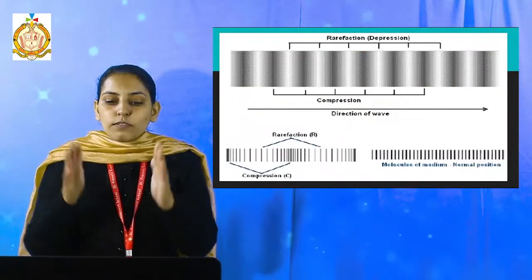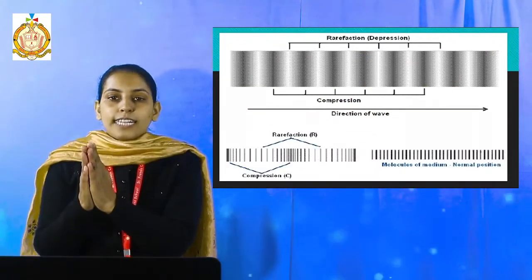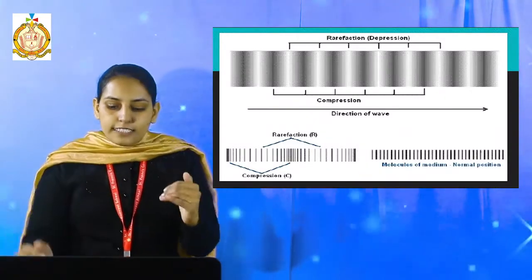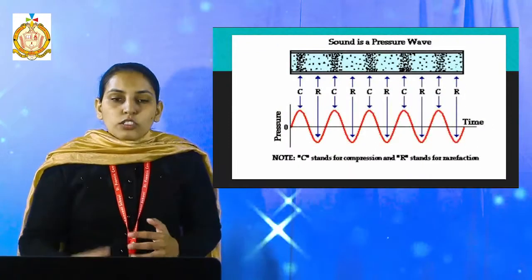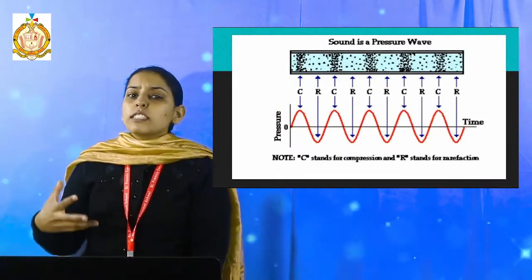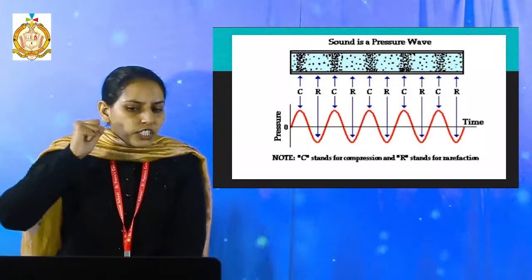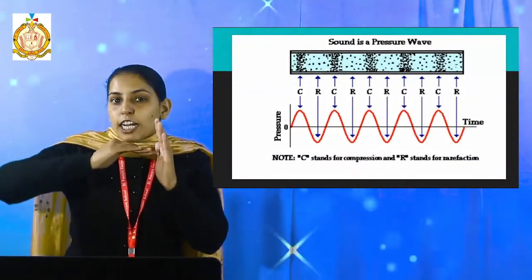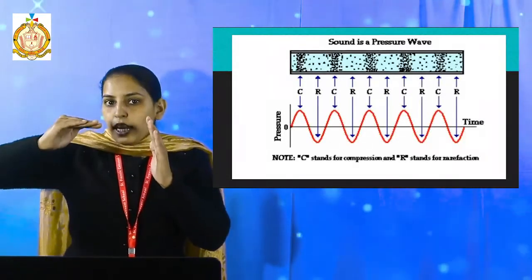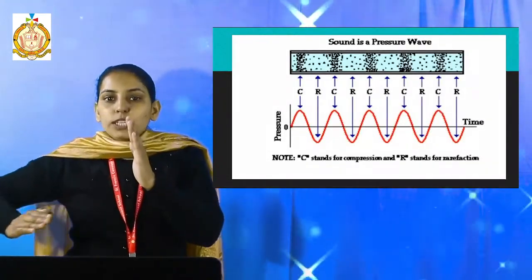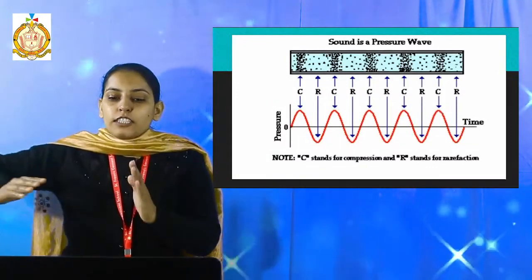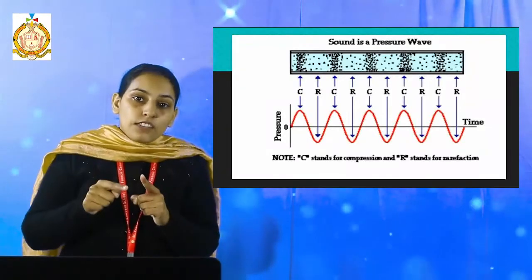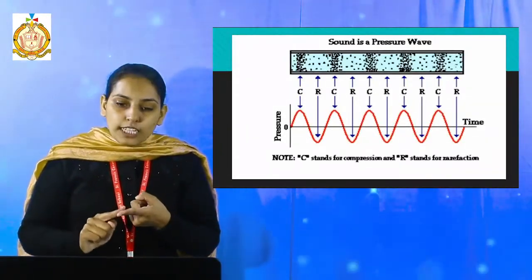When the points are closer, it is called compression, and when the points are away from each other, it is called rarefaction. How is the transverse wave formed from compression and rarefaction? Where there is compression, at that point a peak is formed. And where there is rarefaction, at that point the peak is towards the lower direction. As seen in the diagram, in this way the transverse wave is formed.